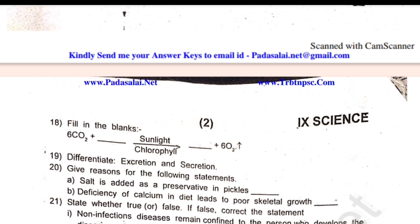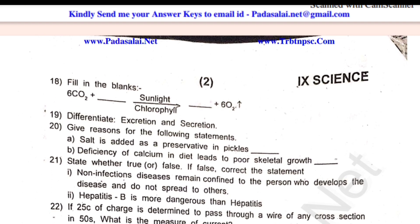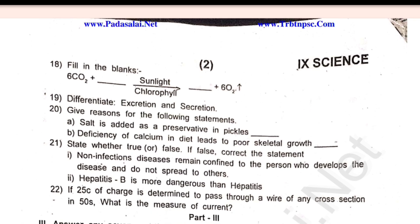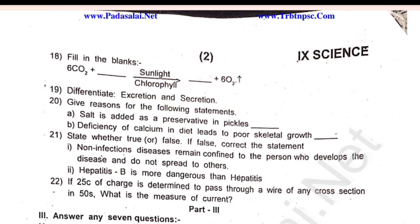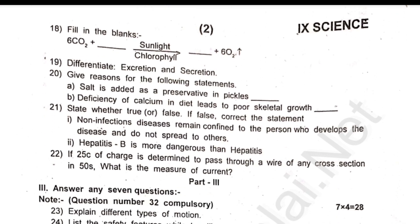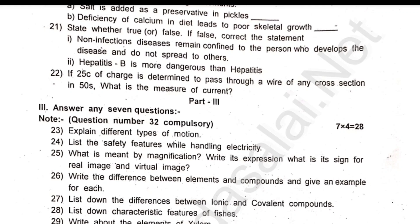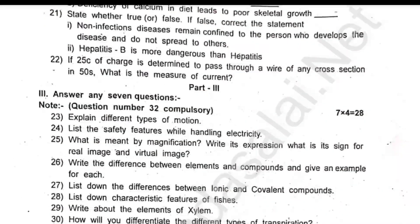Next, Part 3 has 4 marks each, 7 questions for 28 marks. Compulsory questions include: explain different types of motion, list the safety features while handling electricity, write the difference between elements and compounds and give an example for each. Question 32 is compulsory: calculate the number of neutrons, protons and electrons. This question is compulsory.